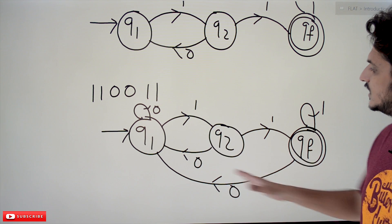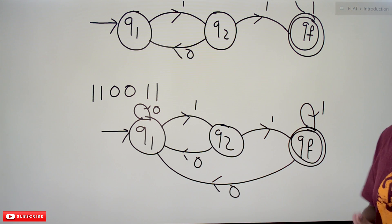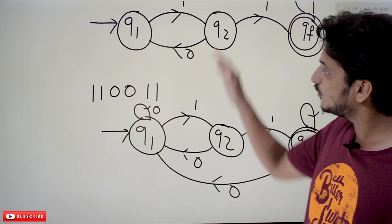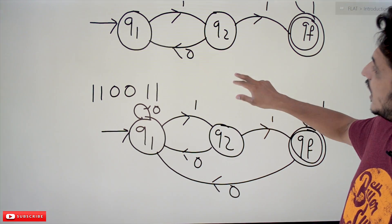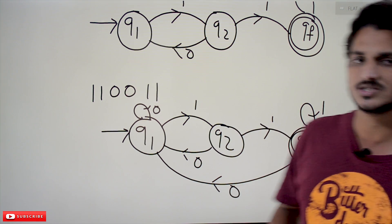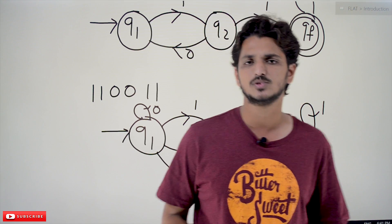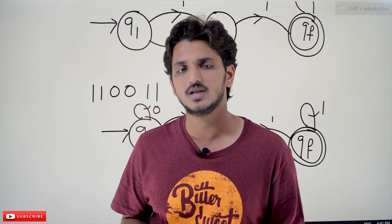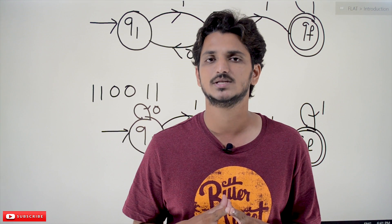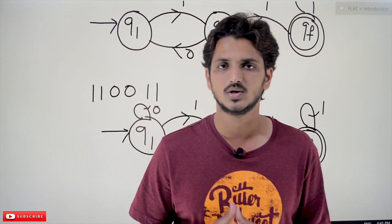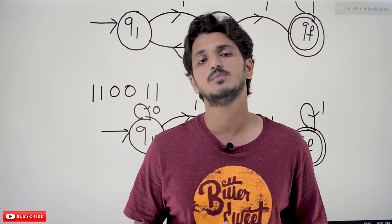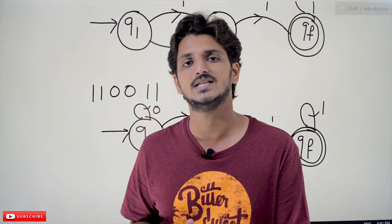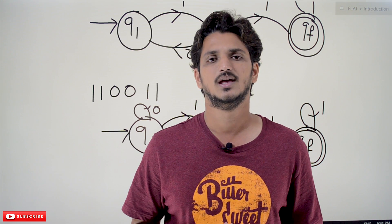That's why it is called a Deterministic Finite Automata. This is how we construct the logic. In our next classes we will discuss a few more examples. Hope you understand the concept. If you have any questions, please post them in the comment section below. Thanks for watching. If you haven't subscribed to our channel, please subscribe and press the bell icon for the latest updates. Thank you.